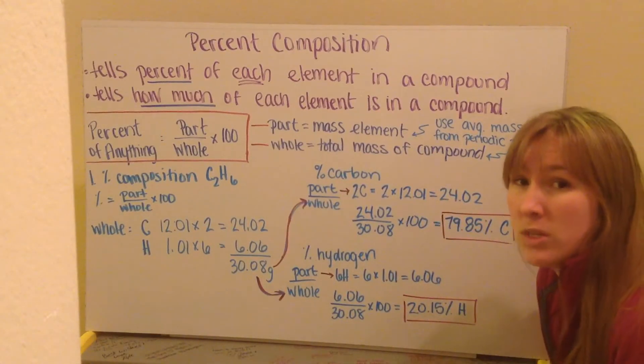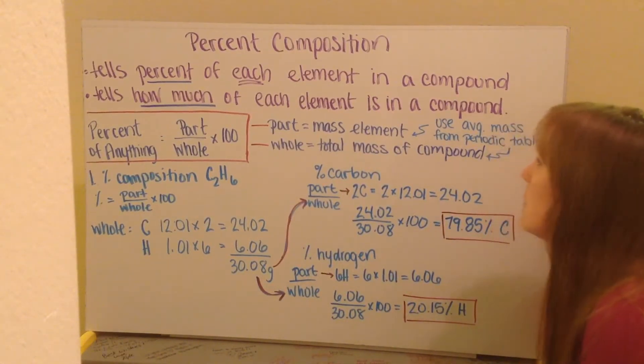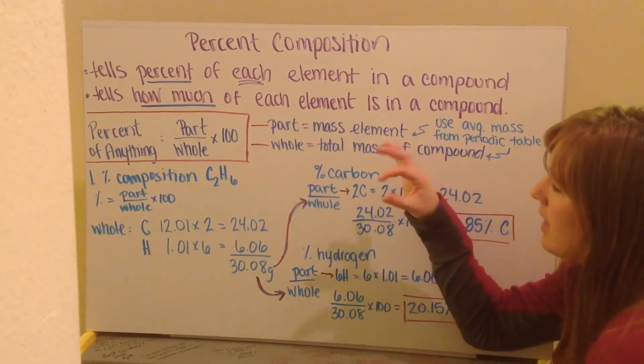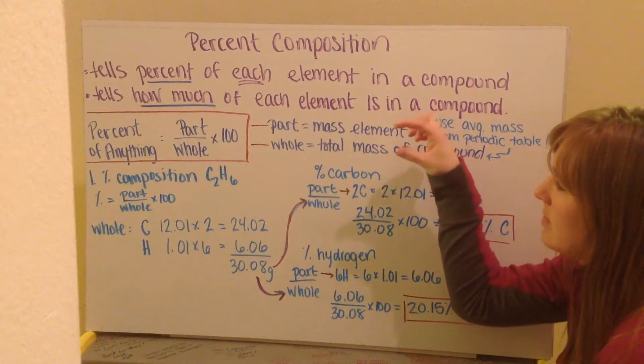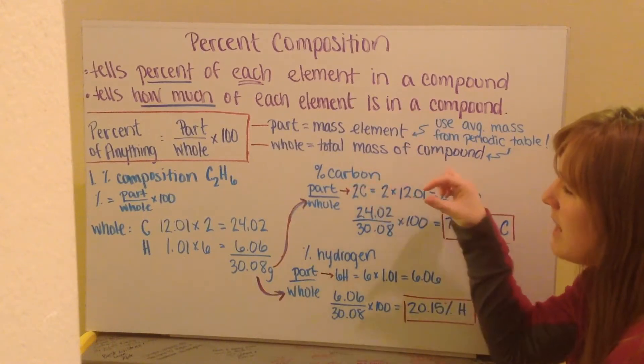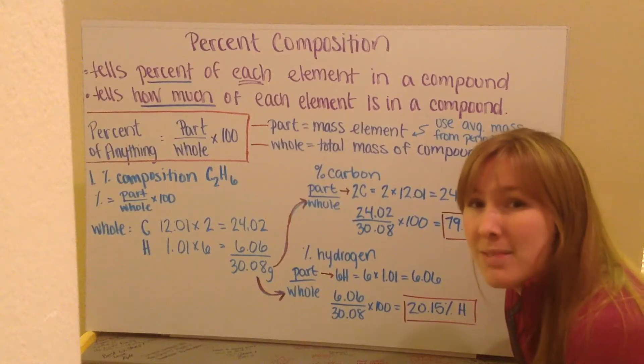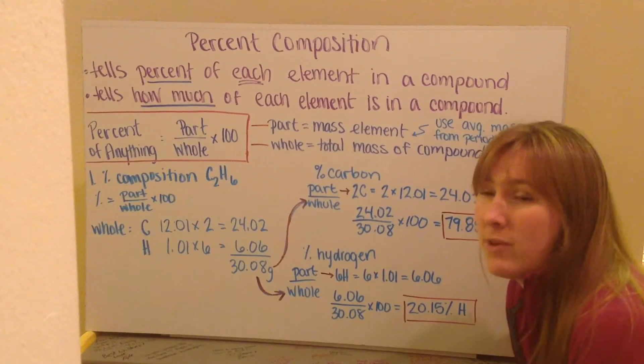The masses we're going to use come from our periodic table. On the periodic table in the element square, you have the element symbol in the middle, the atomic number on top, and the average mass number at the bottom. That average mass number at the bottom is the mass you're going to use for every one of our elements.